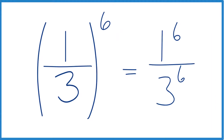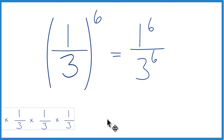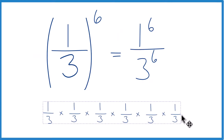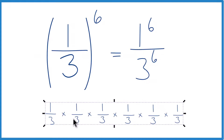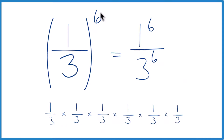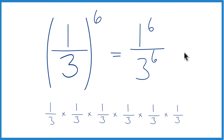If you think about it like this: we have one-third times one-third times one-third times one-third times one-third times one-third. All those ones give us one to the sixth, and multiplying the threes gives us three to the sixth. That's why it's the same thing.